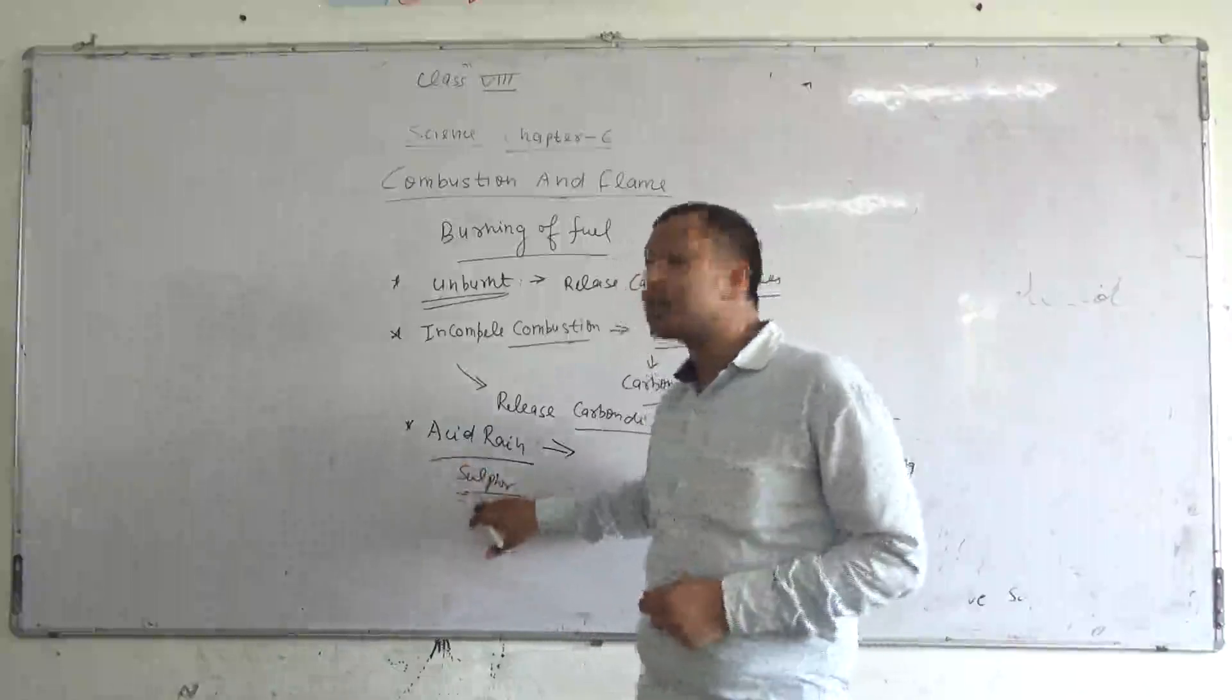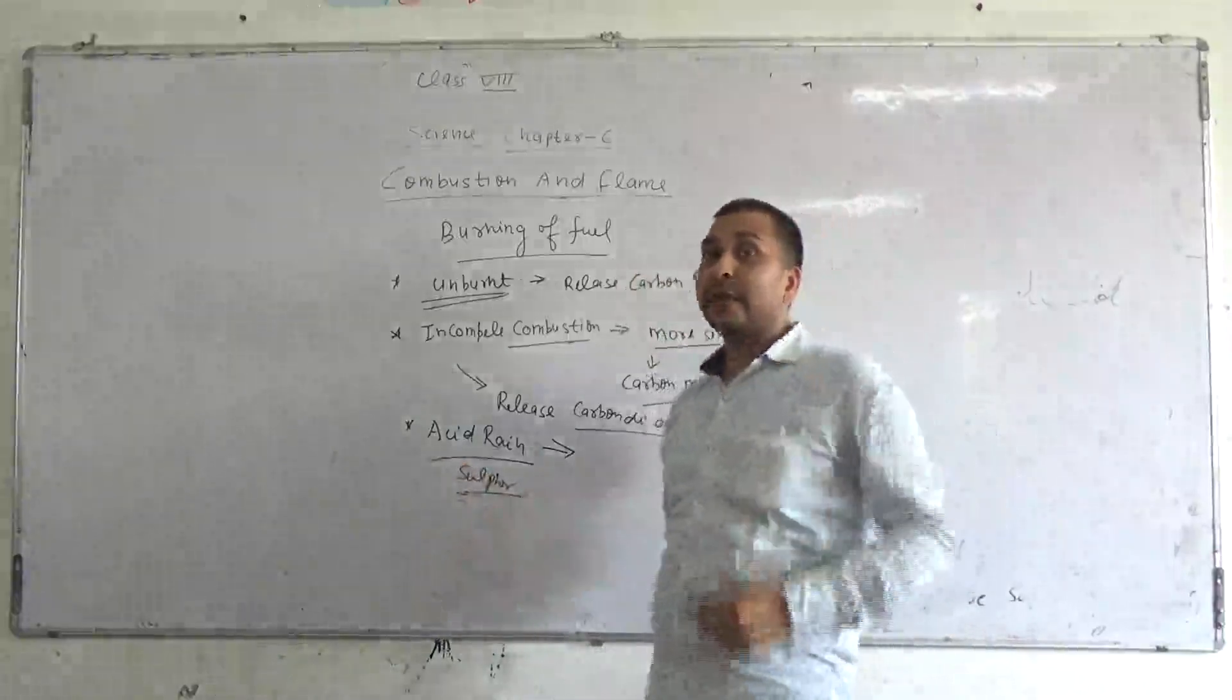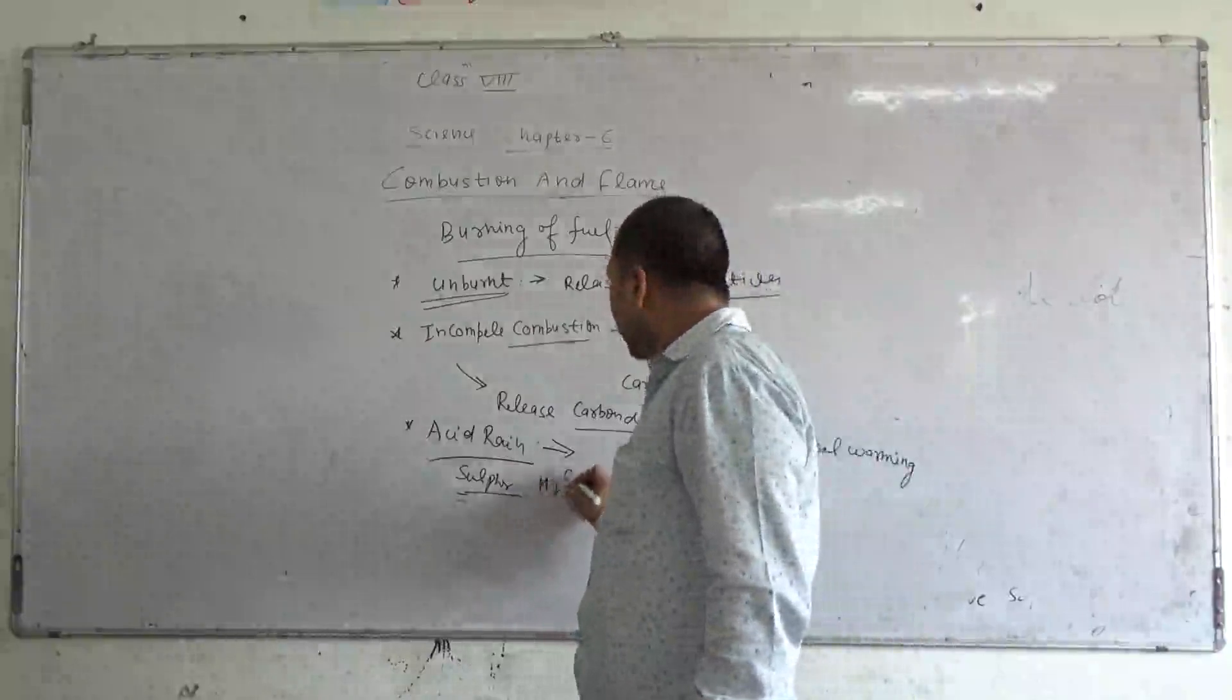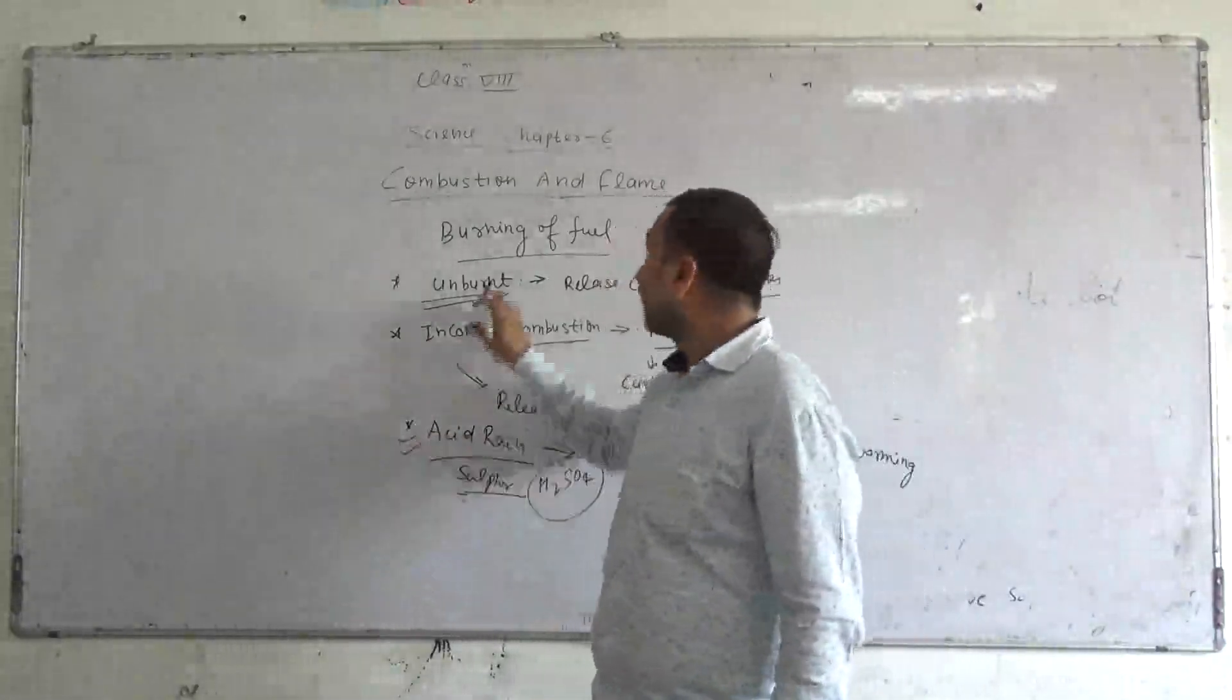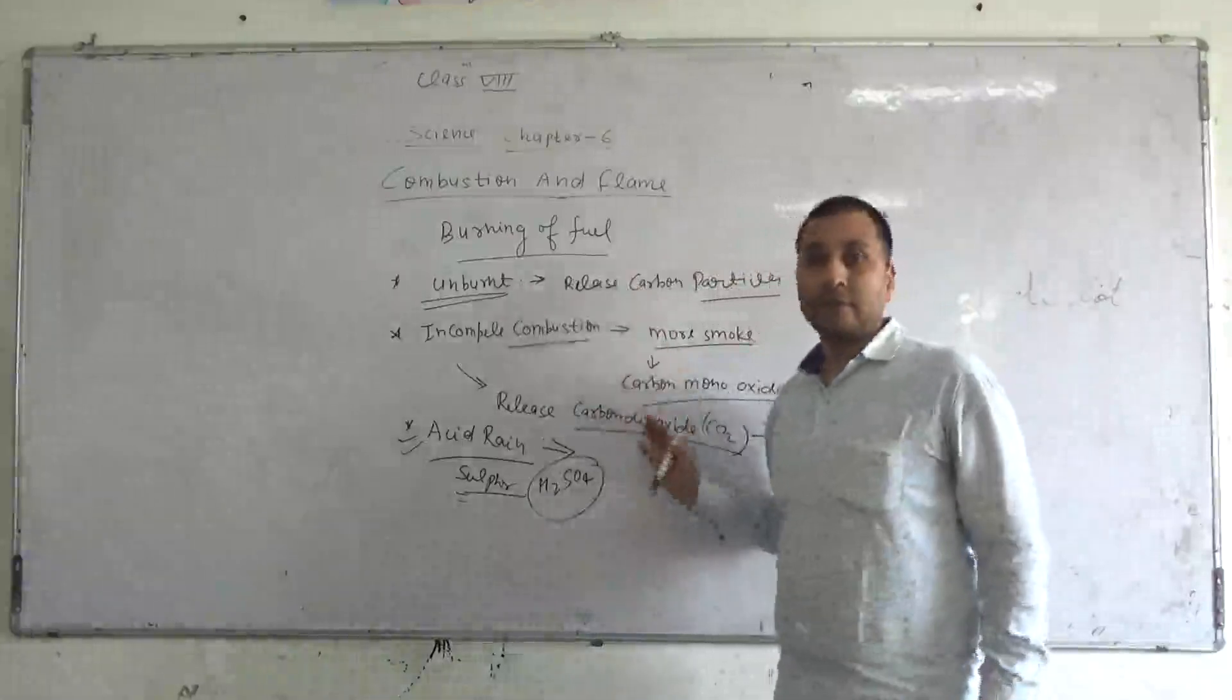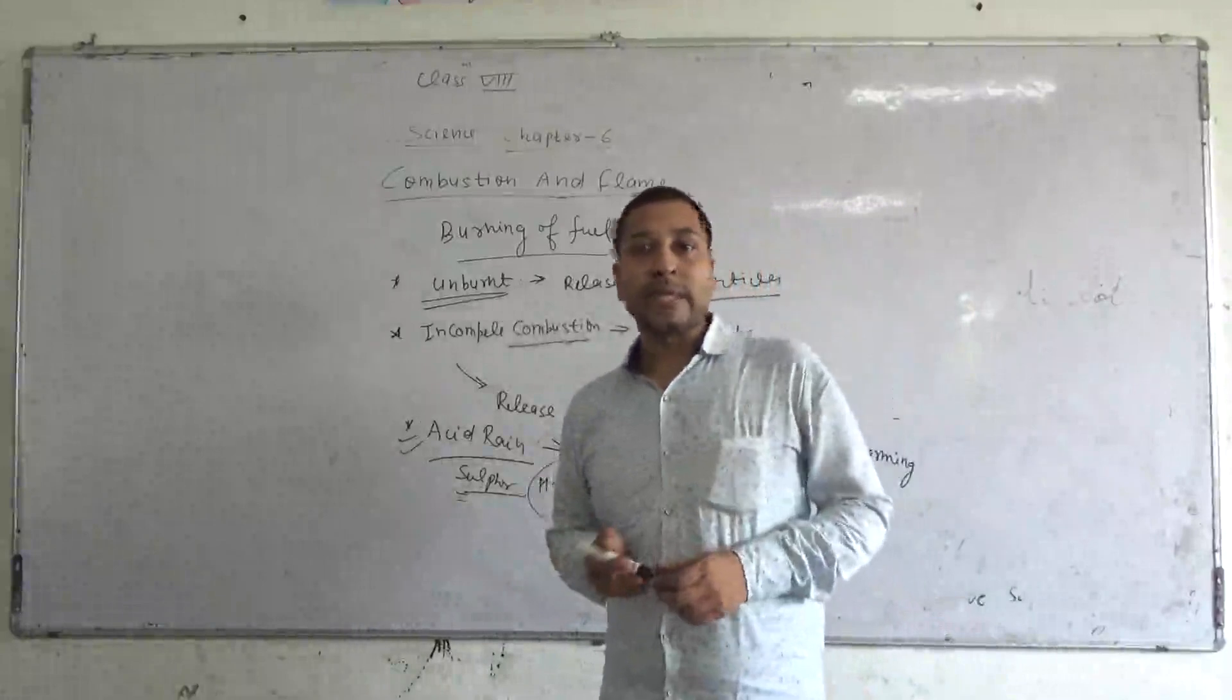So if we burn the coal, coal will create the sulfur, sulfur goes up in the atmosphere and when the rain water mixes with it, it makes H2SO4 which is sulfuric acid. So acid rain also occurs when burning of fuel. This was the topic burning of fuel and we will meet in the next chapter. Thank you.